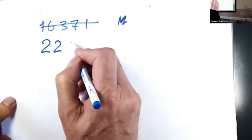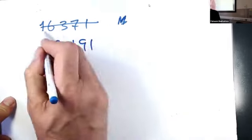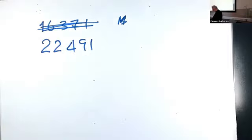Here's the number 22491. Is the product of two prime numbers? What are those two prime numbers?